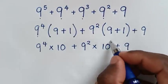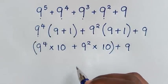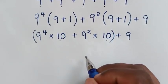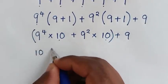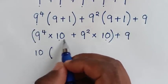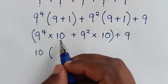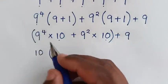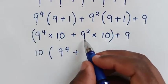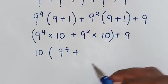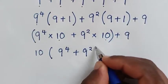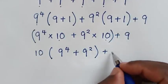Then into here, we take 10 out of the bracket, then into here we take 10 out of the bracket. When we take this 10, 9 power 4 times 10 divided by 10 gives us 9 power 4. Then plus 9 power 2 times 10, then plus 9 power 2, then bracket, plus this 9.